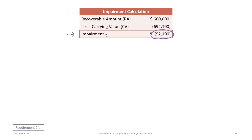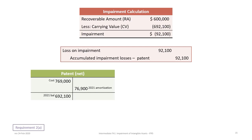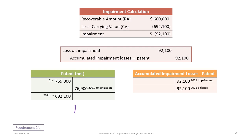Impairment equals the recoverable amount minus the carrying value. Since the asset is impaired, we create a journal entry: debit loss on impairment $92,100, and credit accumulated impairment losses for the patent $92,100. The patent account shows an original cost of $769,000 and amortization of $76,900, resulting in a carrying value prior to impairment of $692,100 — the same as we saw in tutorial 23B under ASPE.